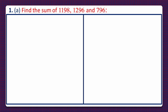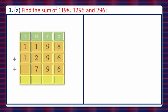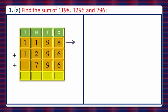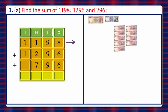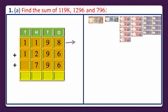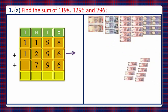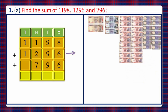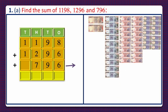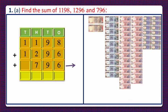For adding them, let's take the currency notes. For 1198 we'll take a 1000 rupee note, a 100 rupee note, 9 ten-rupee notes, and 8 one-rupee notes. For 1296 we'll take a 1000 rupee note, 200 rupee notes, 9 ten-rupee notes, and 6 one-rupee notes. For 796 we'll take 700 rupee notes, 9 ten-rupee notes, and 6 one-rupee notes.